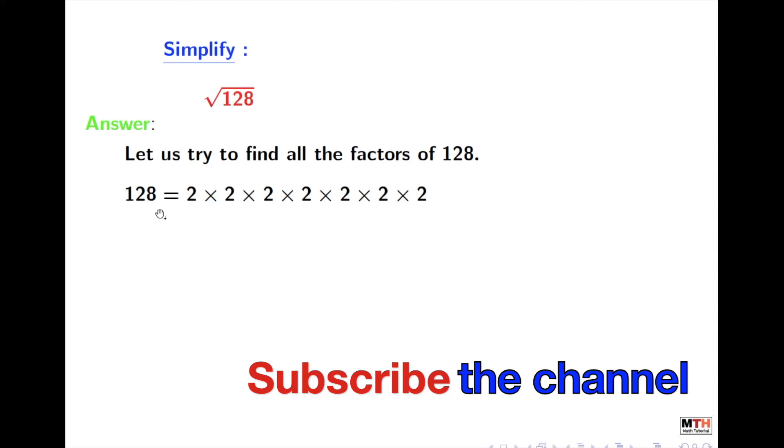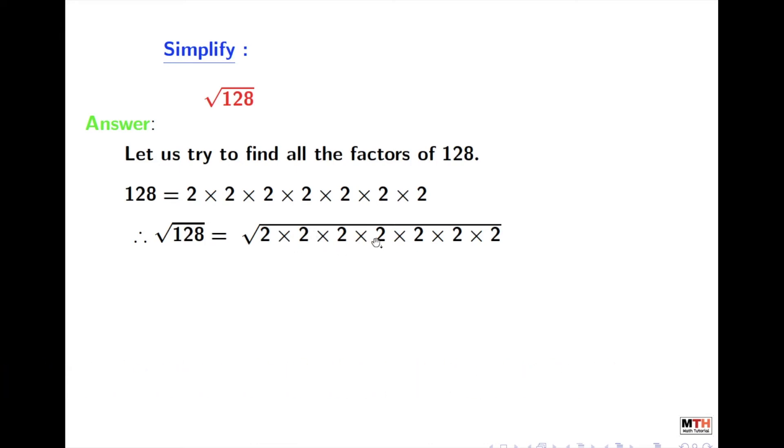Now we will take the square root on both sides. We write square root of 128 equals the square root of the product of seven 2's.